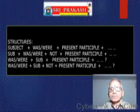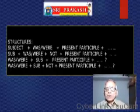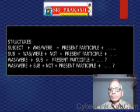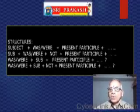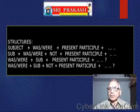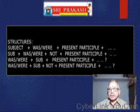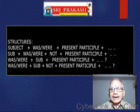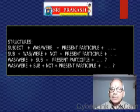Structures: Assertive Positive — Subject plus Was/Were plus Present Participle. Assertive Negative — Subject plus Was/Were plus Not plus Present Participle. Interrogative Positive — Was/Were plus Subject plus Present Participle. Interrogative Negative — Was/Were plus Subject plus Not plus Present Participle.